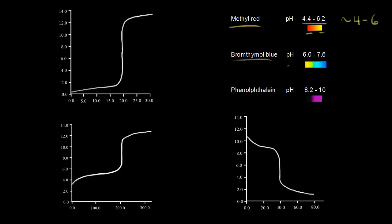Bromothymol blue is an indicator that goes from yellow to blue over a pH range of about 6 to 7.6, so approximately 6 to 8. And phenolphthalein is an indicator that goes from colorless to pink or magenta over a pH range of about 8.2 to 10, so approximately 8 to 10.